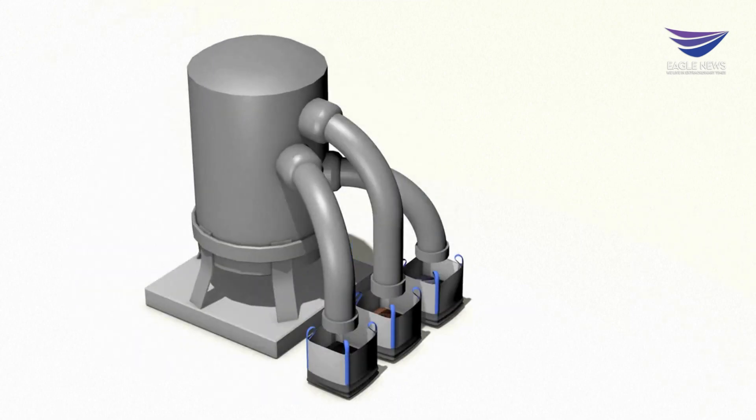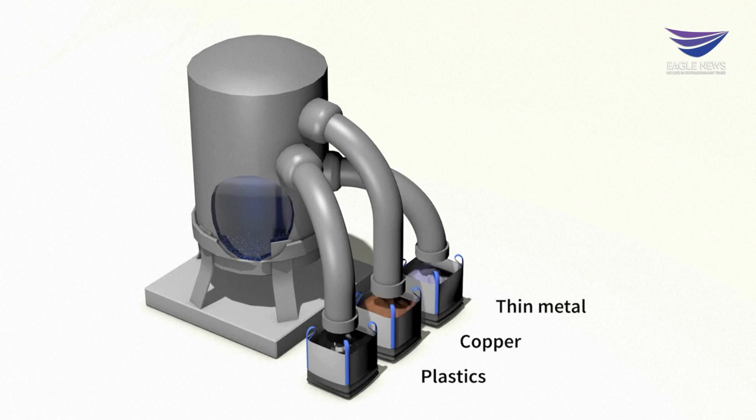Plastics, copper, and the thin metal layers containing silver are separated by their density using flotation.